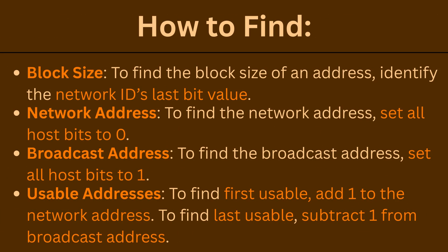How to find the block size of an address: simply look for the last bit in your network ID — that is the block size. How to find a network address: simply convert all host bits to 0. How to find a broadcast address: simply convert all host bits to 1. How to find the usable address range: for the first usable, add 1 to your network address; for the last usable, subtract 1 from your broadcast address.